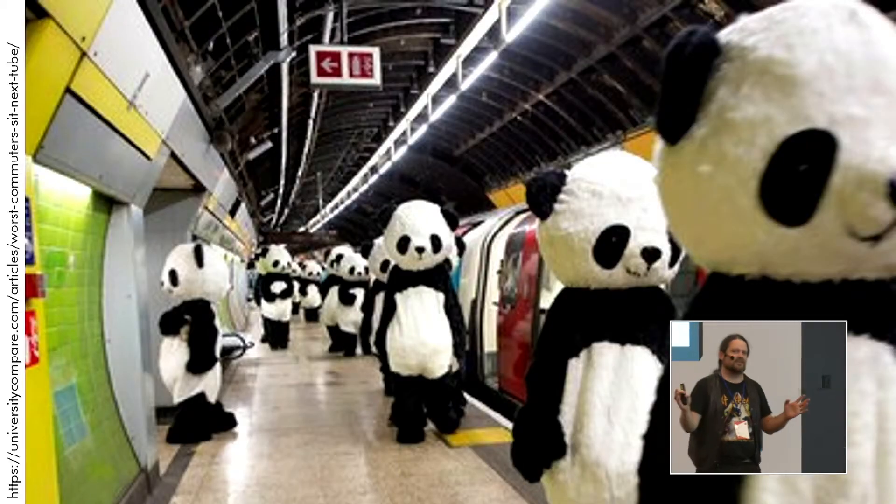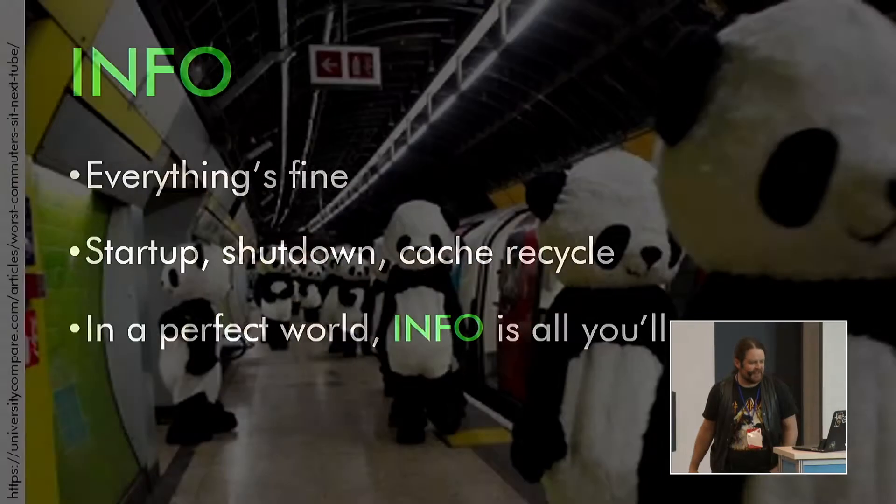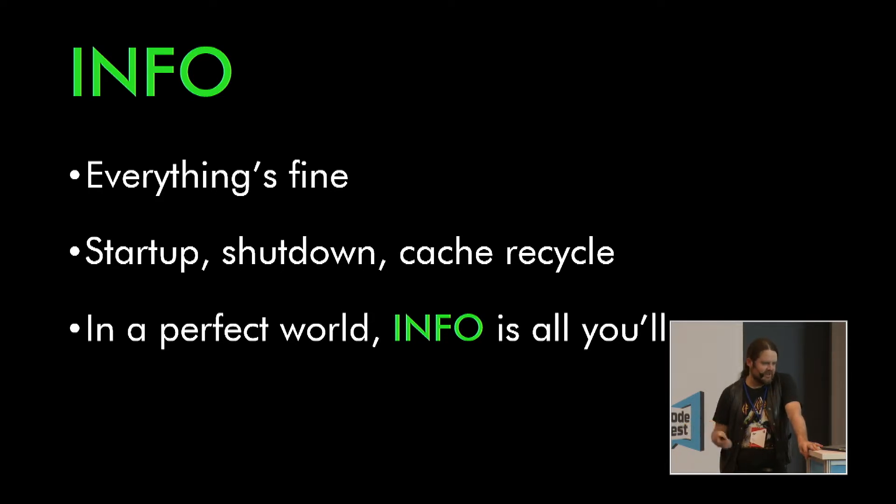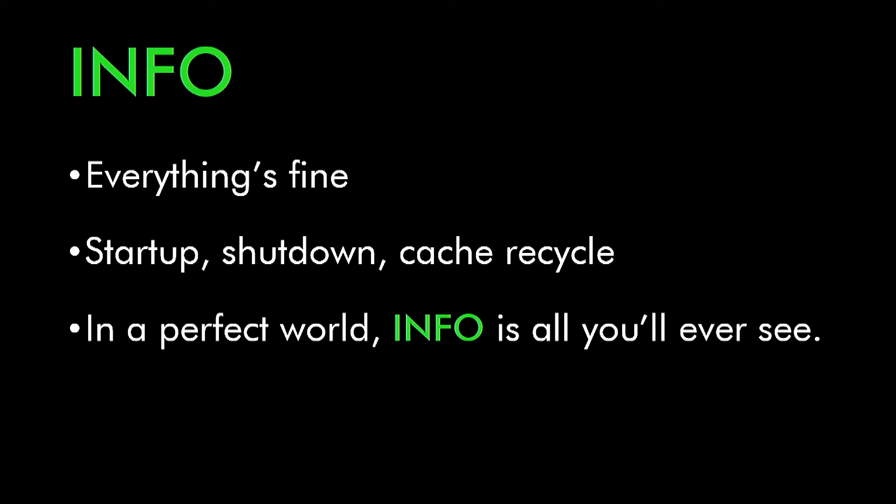Info messages are just reassuring — startup, shutdown, cache recycle — everything is fine. The main value of info messages is: you come in Monday morning after a long weekend and there are no log entries. Either you had a perfect weekend with no errors, no warnings, nothing went wrong — or two, the logging infrastructure failed. Info is a kind of sanity check: you can see things have been recycling, the cache has been refreshing every 10 minutes, no errors, no warnings. Whereas a blank log file is really suspicious and you need to start investigating.